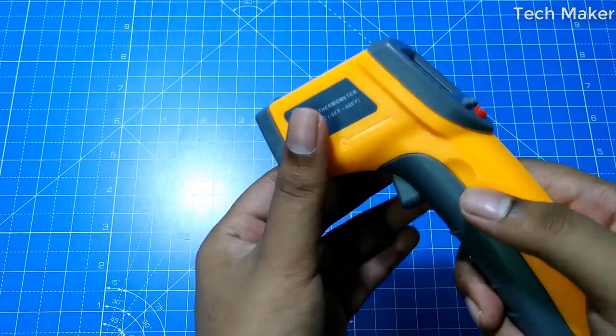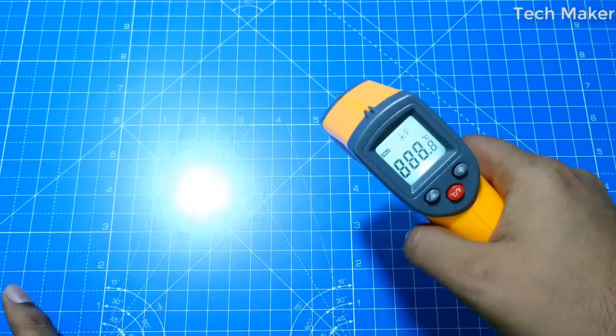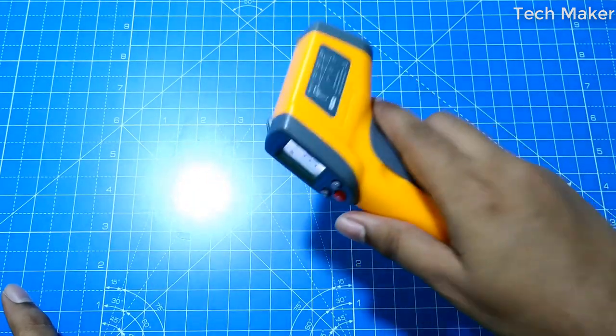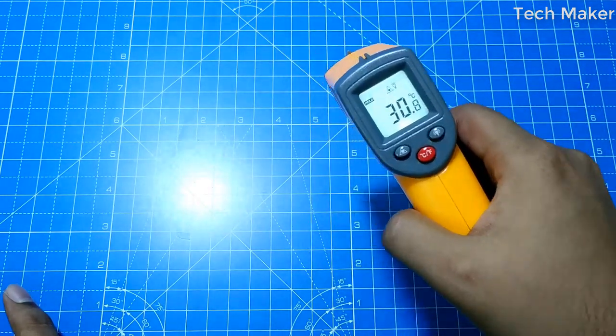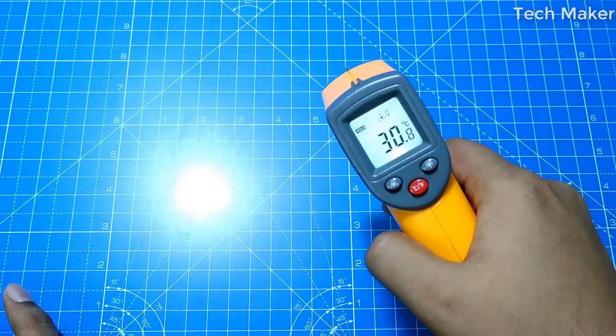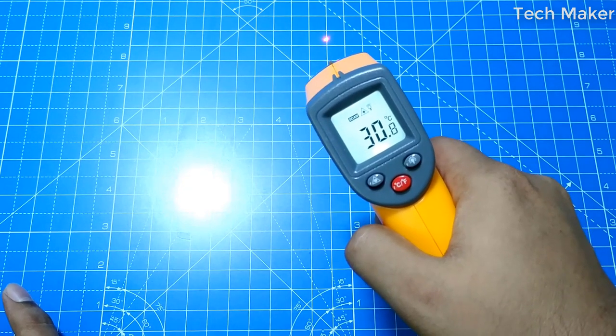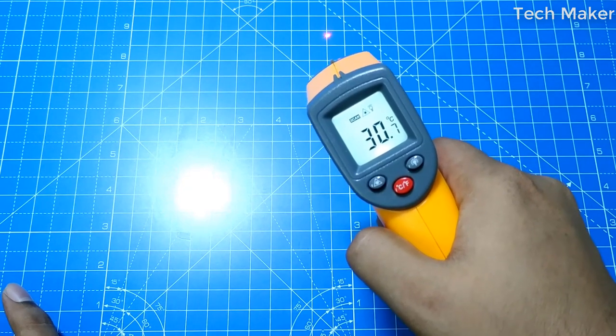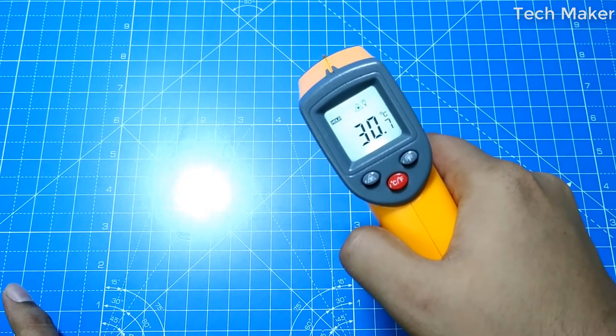When you click on the trigger, you will see the switching from hold to scan. The scan means it is reading the temperature. And hold means it will show the last occurrence of the temperature.